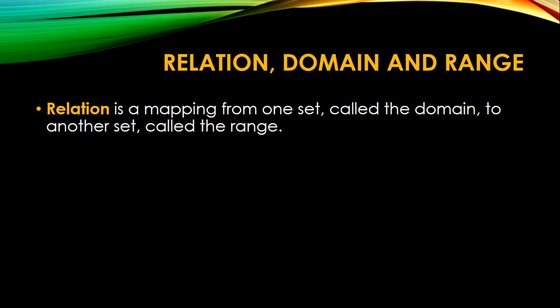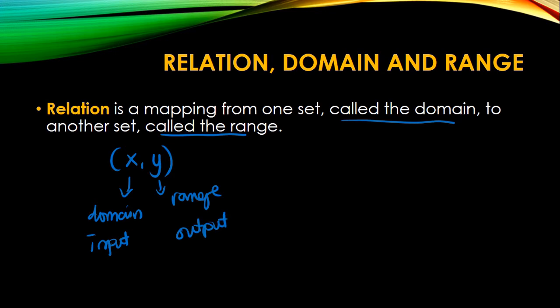So relation is a mapping from one set called the domain to another set called the range. So in an ordered pair (X, Y), your X is the domain and your Y is the range. Or other books use the word input for the domain and output for the range.